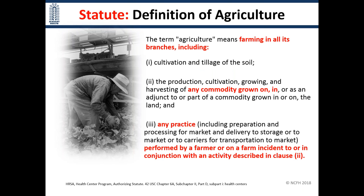The statutory definition of agriculture means farming in all of its branches, including cultivation and tillage of the soil, production, cultivation, growing, and harvesting of any commodity grown in or on or as an adjunct to commodity grown on the land, and any practice including preparation and processing for market performed by a farmer. For many years people interpreted this as meaning just horticulture because it starts by talking about cultivation and tillage — but the next slides will show the broad scope of what is included.